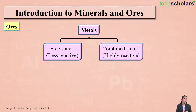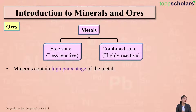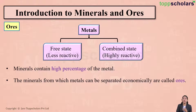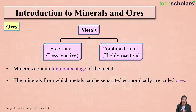Compounds of metals which are generally accompanied with certain impurities are called minerals. Minerals which contain a high percentage of the desired metal are called ores. In other words, ores are those minerals from which the metal can be separated economically, as these ores contain a high percentage of the metal.